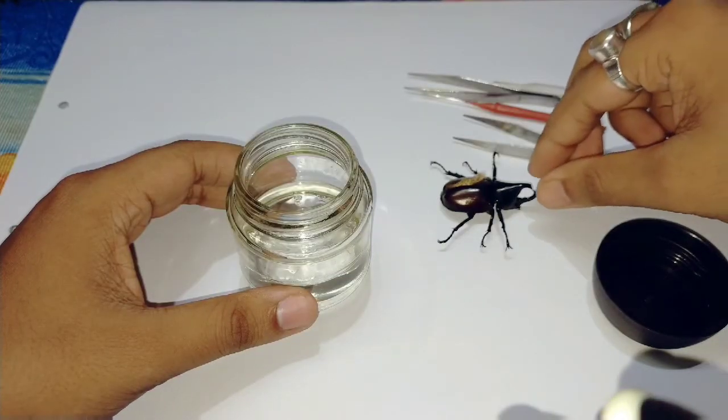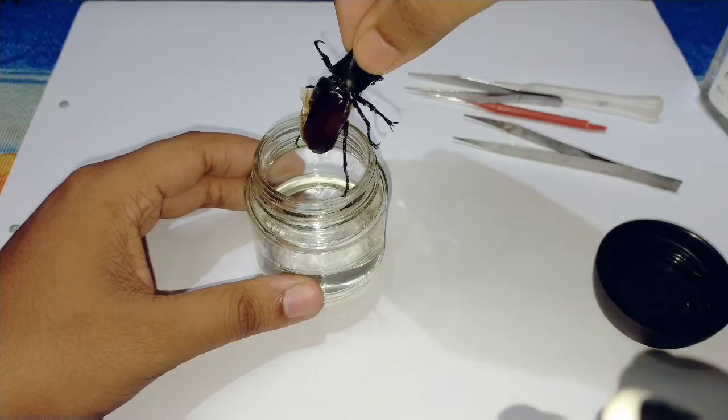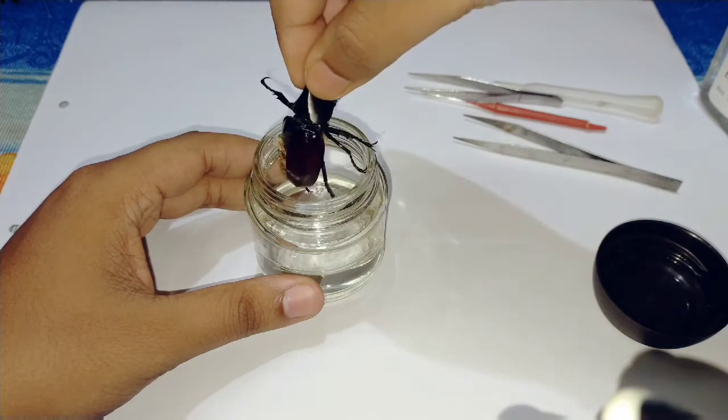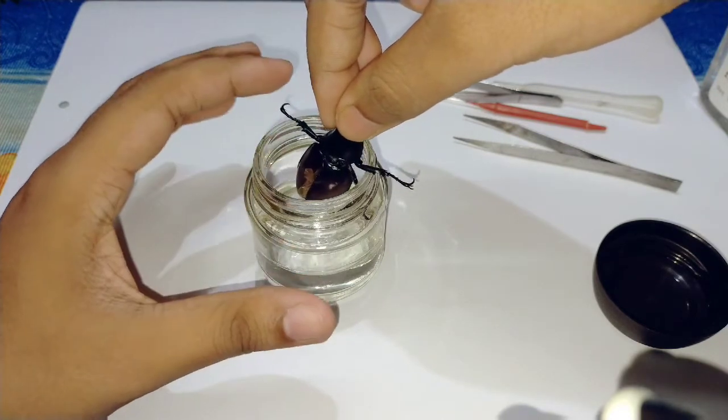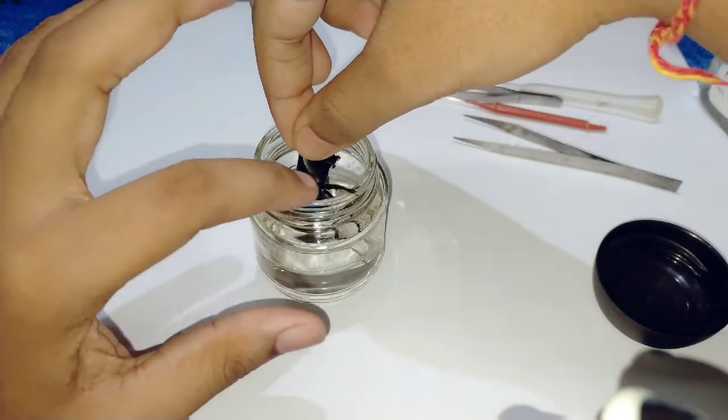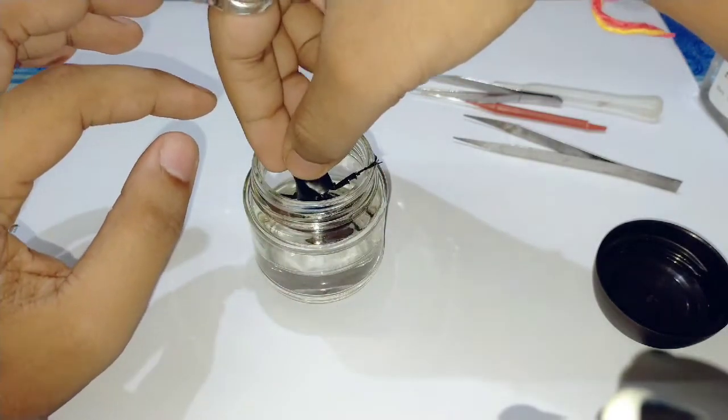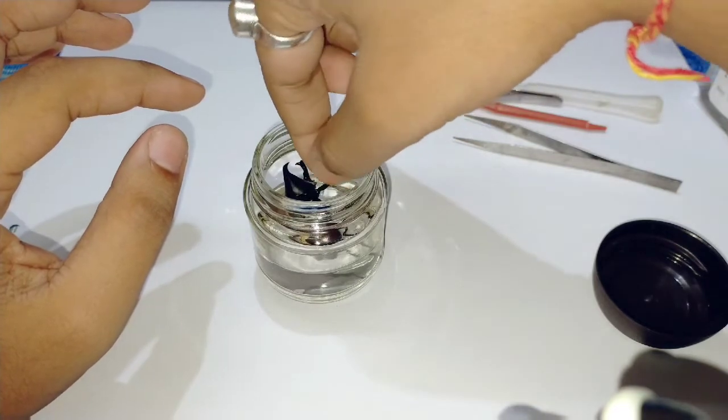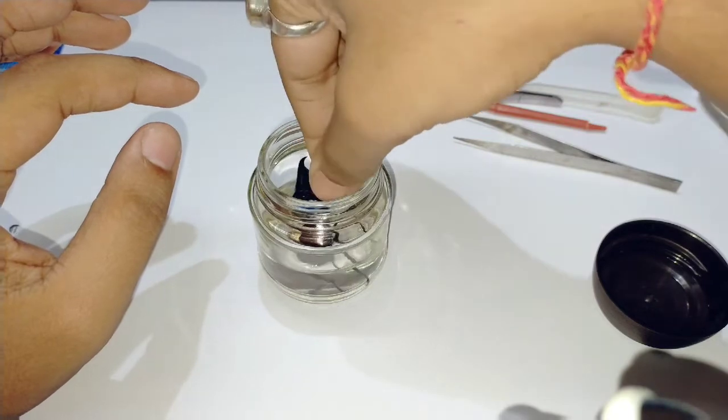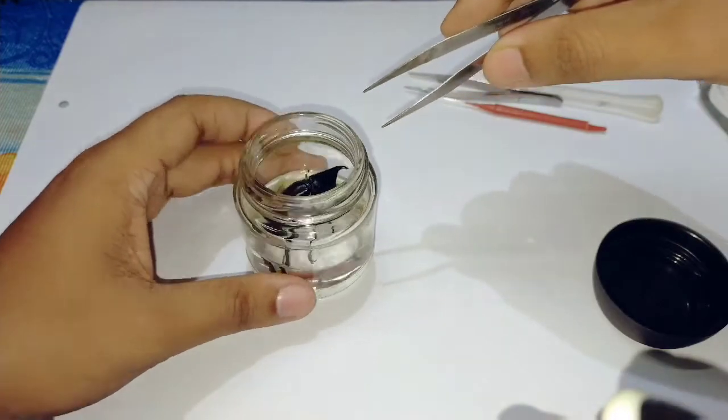Now take the insect and put it in the container, this half-filled container. Put the insect very slowly. Now take it in the container with the help of the forceps.